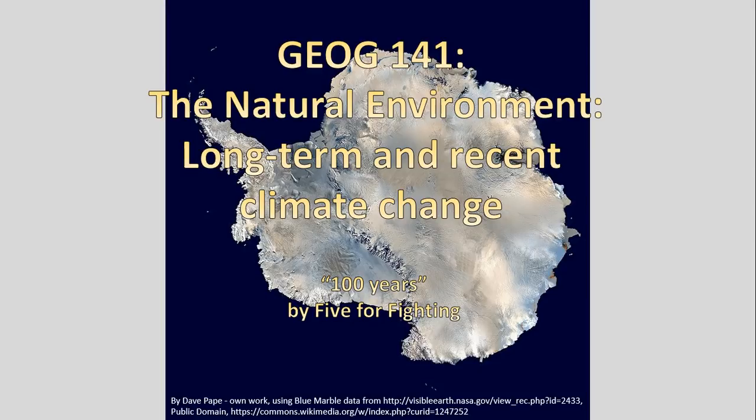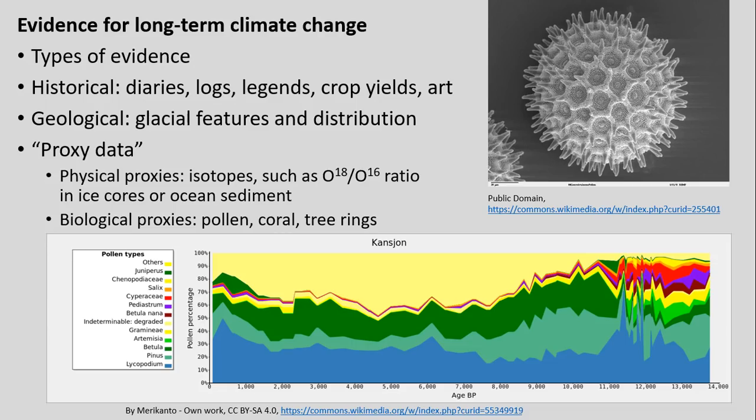We're going to be talking about hundreds of thousands, millions of years into Earth's past, trying to understand from different types of evidence — what we call proxy data — how Earth's climate has changed over time.